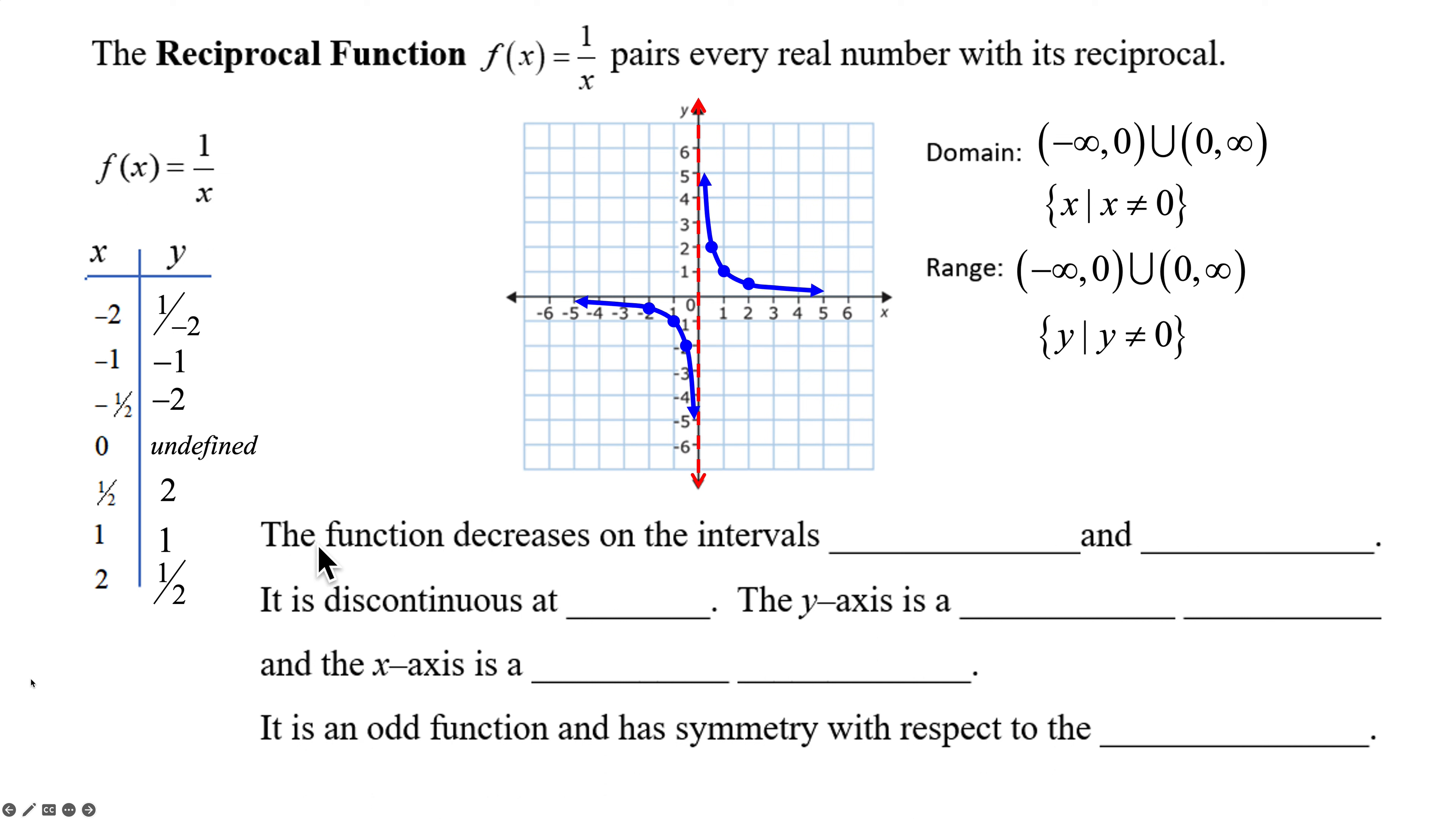You can put that in interval notation, or you can use set builder notation. And I'm perfectly happy on your test that you can put in just the x cannot equal zero. That is called an implied domain. You're implying that the domain is all real numbers except for this value. And you can do the same thing for the range. As you see with our range here, our y's, we're never going to touch the x-axis. So again, same answer as the domain for the range. The function is decreasing on the intervals negative infinity to zero and zero to infinity. It's discontinuous at x equals zero. The y-axis is our vertical asymptote and our x-axis is now our horizontal asymptote. And this is an odd function which has symmetry with respect to the origin.